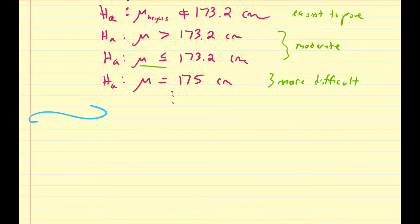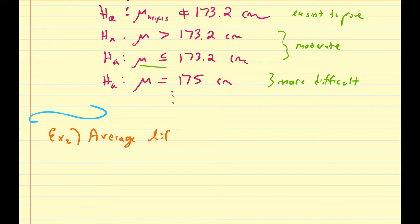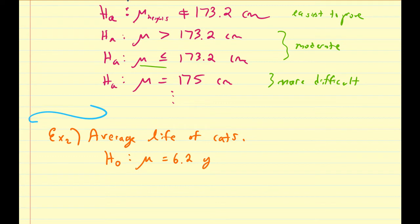Let's look at a couple more examples of null and alternative hypotheses. For example two, let's assume we want to talk about the average life of some animal — specifically cats. One of your friends comes up to you and says, 'For a particular breed of cats, I believe that the average life of that breed is going to be 6.2 years.' So this would be the null hypothesis.